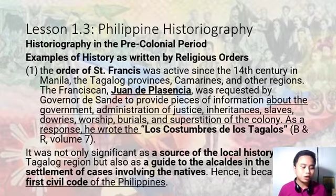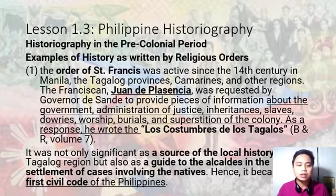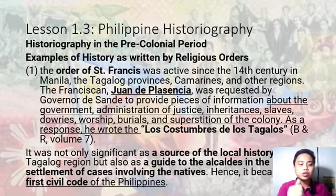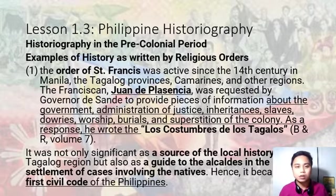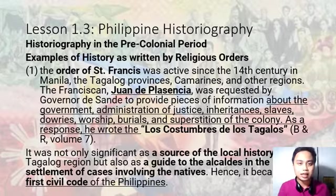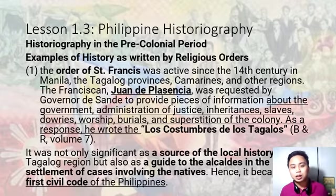Ito yung mga halimbawa ng mga kasaysayang sinulat ng mga religious orders. Katulad ng Order of St. Francis na aktibo since the 14th century in Manila, the Tagalog provinces, Camarines and other regions — at the Franciscan Juan de Placencia. Si Juan de Placencia ay inirequest ni Gobernador de Sande na mangalap ng impormasyon patungkol sa gobyerno at pag-administration, mga mana, mga alipin, mga dowries, worships, at mga kaugalian ng mga Tagalog. At meron na siyang Los Costumbres de Tagalos.